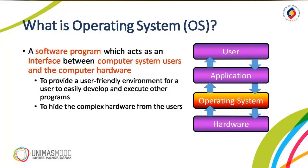So, what is operating system? It is a software program which acts as an interface between computer system users and the computer hardware. Take a look at the diagram on the right side of this slide that shows the layers of connection between the user at the top layer and the hardware or machine at the bottom layer. When a user uses a computer application, the application on behalf of the user communicates with the hardware through the operating system. The OS provides a user-friendly environment for a user to easily develop and execute their program and to hide the complex hardware from the user.